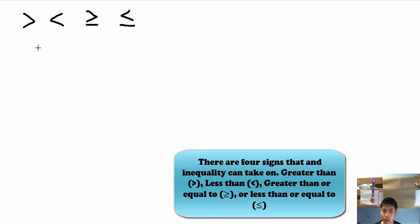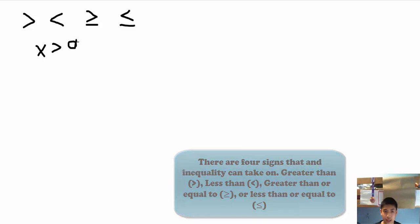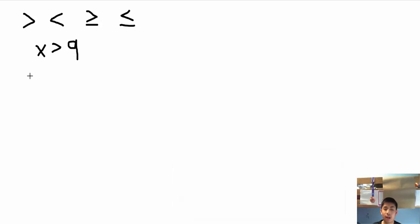Now take for example the inequality x is greater than 9. To graph this on a number line we first have to understand where should we put the circle. Now since it is x is greater than 9 we know for sure that the circle goes on top of the 9.